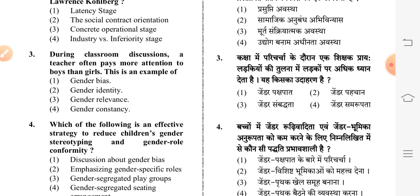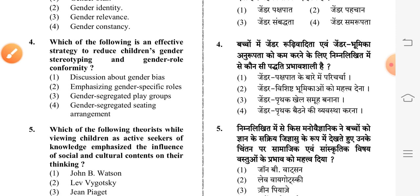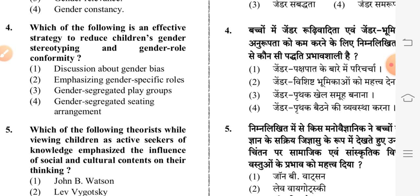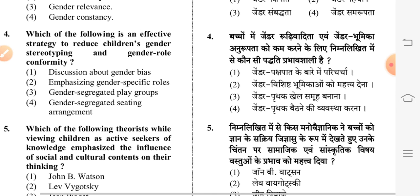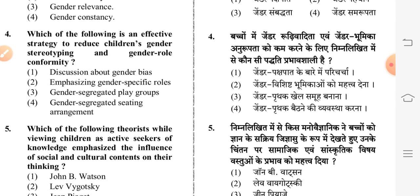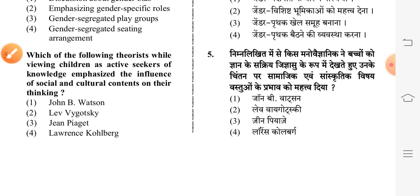Next question: which of the following is an effective strategy to reduce children's gender stereotyping and gender role conformity? The first option is correct: discussion about gender bias. Fifth question: which of the following theorists, while viewing children as active seekers of knowledge, emphasized the influence of social and cultural contexts on their thinking?